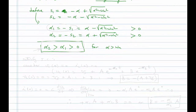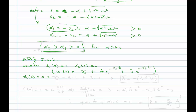Let's satisfy initial conditions. Consider VC(0) equal to zero and IL(0) equal to zero. Here is our complete solution: VC(t) equals VS plus A·e^(−α1·t) plus B·e^(−α2·t). That's why alpha_1 was defined as minus S1 — to show the minus sign explicitly and make clear these are negative exponents. And we have shown that alpha_1 and alpha_2 are both positive, so these are negative exponentials.